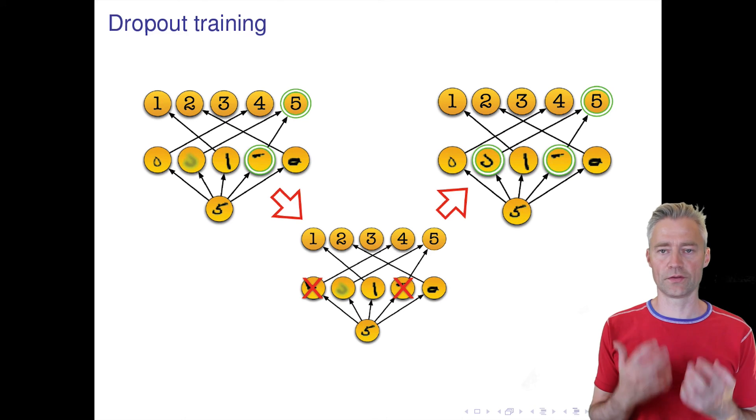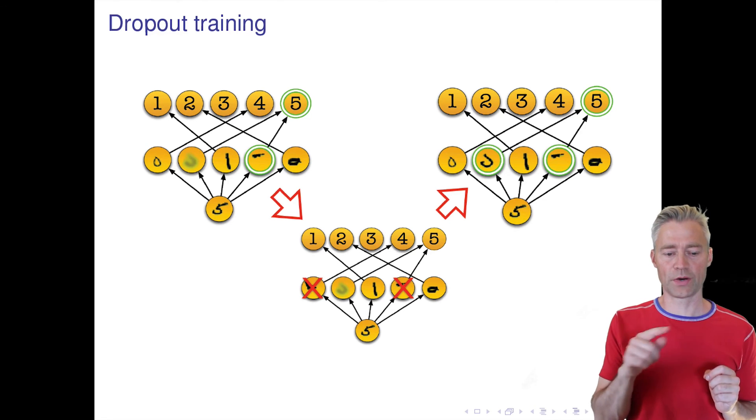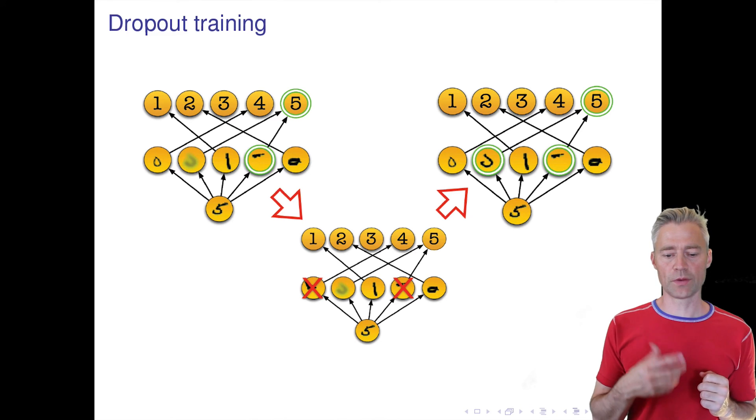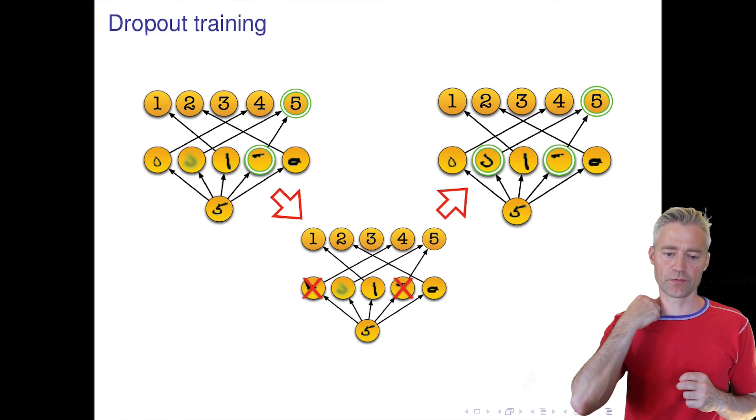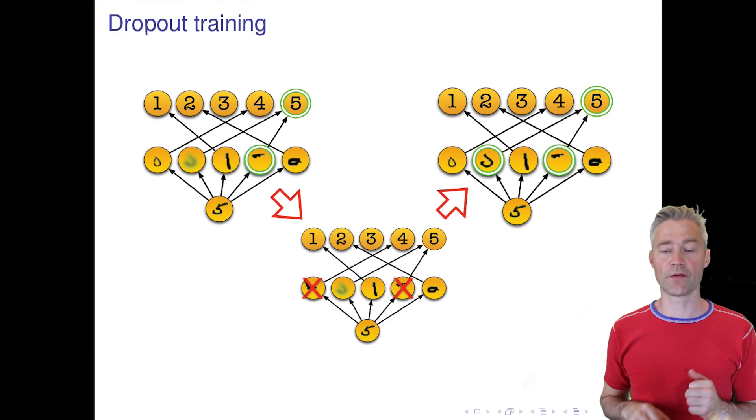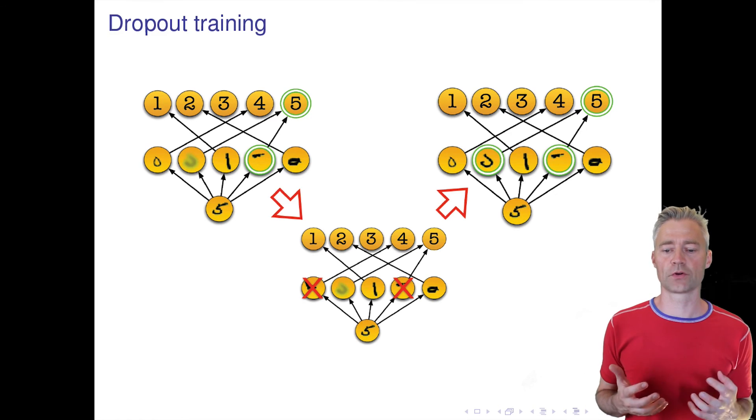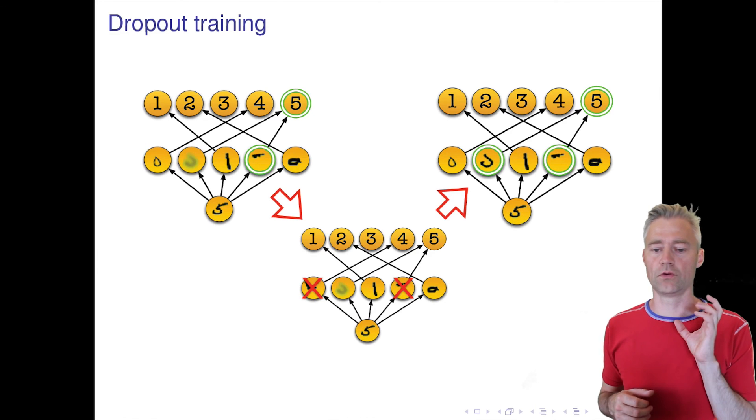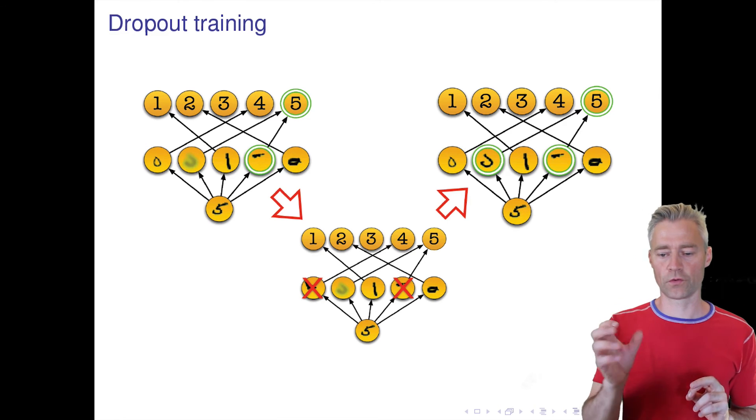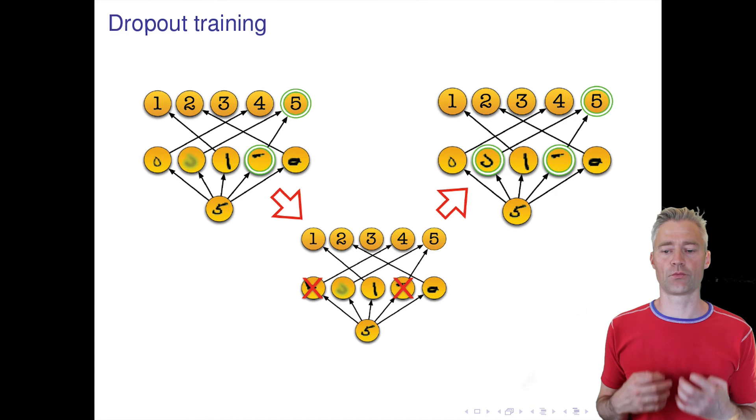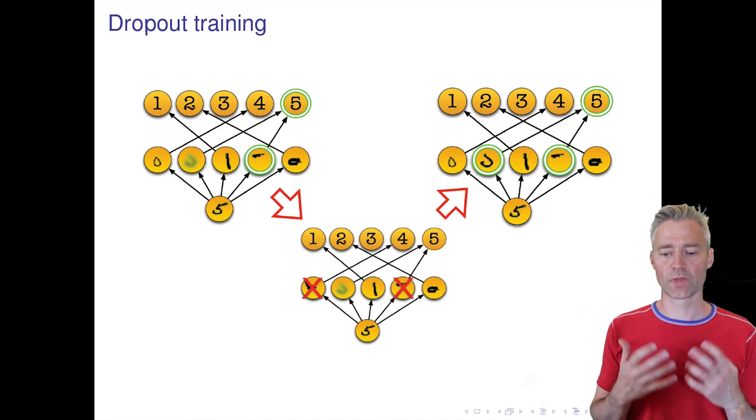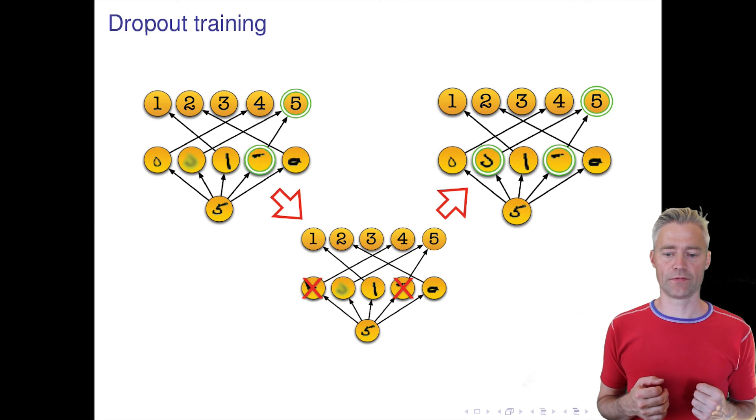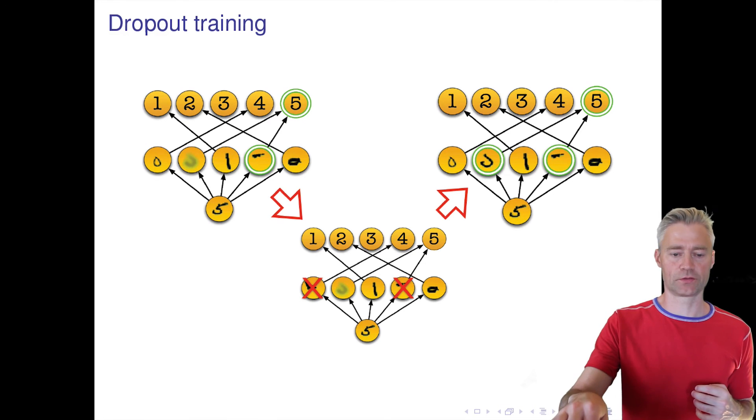But if we apply dropout, then sometimes this very specific feature to get the upper part of the five is dropped out, and that means that the other parts should pay more attention. This is what is shown in the third plot. You can see now after the dropout training, both hidden unit two and four will extract features that are relevant to five, and then will learn better to classify the five. This is the philosophy behind dropout.